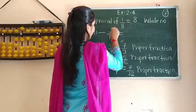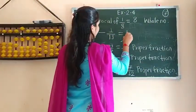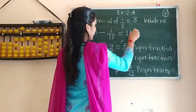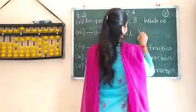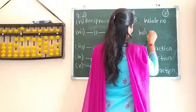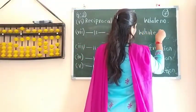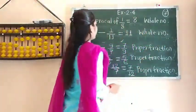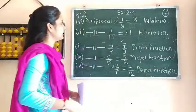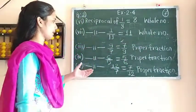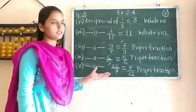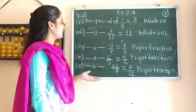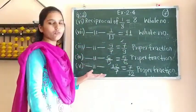Similarly, 1 upon 11 — its reciprocal is 11, so again it is a whole number. In this way you have to make the reciprocal and write down which type of fraction it is, or whether it is a whole number.